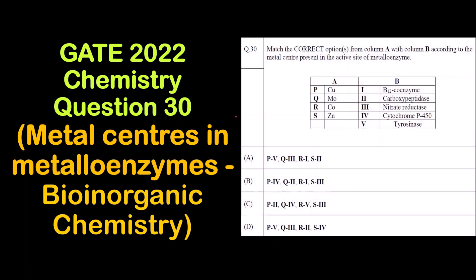Hello everyone, welcome to Chemezone Complete Chemistry. In today's video we are going to solve question 30 which is based on identifying metal centers of the metalloenzymes. We have to find out in which of the metalloenzymes these metals PQRS are present.